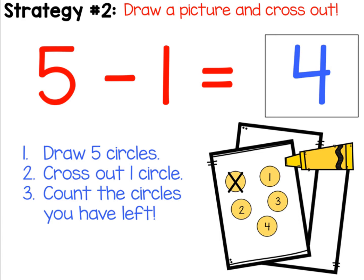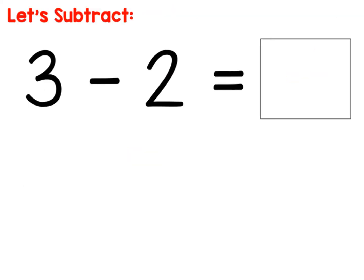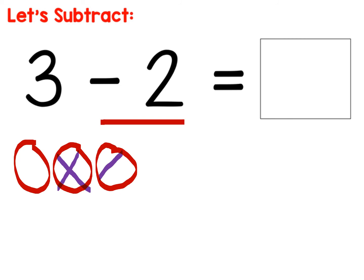Let's try it out. Three minus two. That means I should draw three. One, two, three. Now that says minus two, so I need to put an X on two of them. One, two. And I count how many are left, and I just have one left. So my answer or the difference is one.